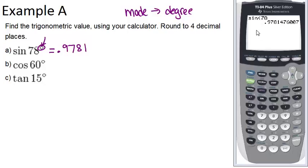So for cosine of 60, now we're just going to do cosine 60, enter, and we get 0.5.